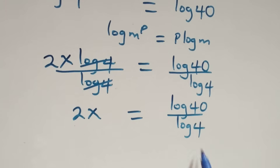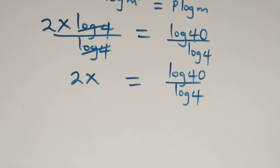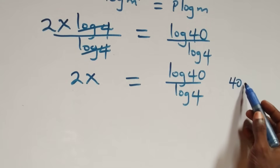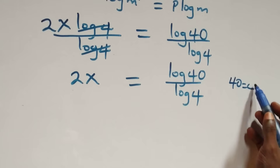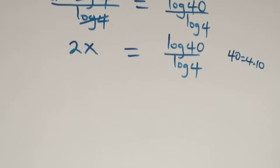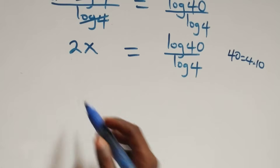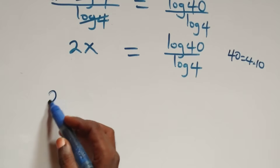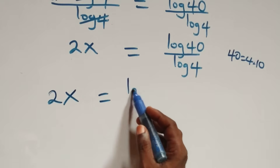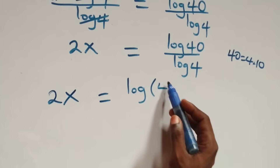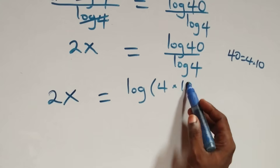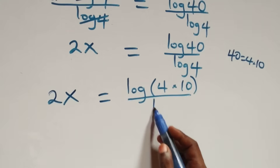From what we have here, we can also express forty as four times ten. Then what we have becomes two x equals to log of four times ten, over log four.